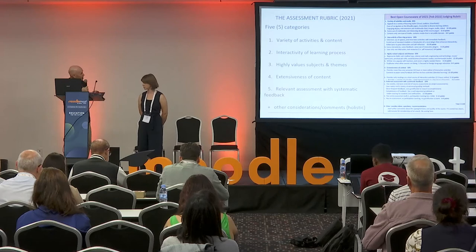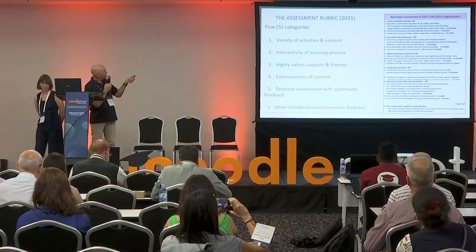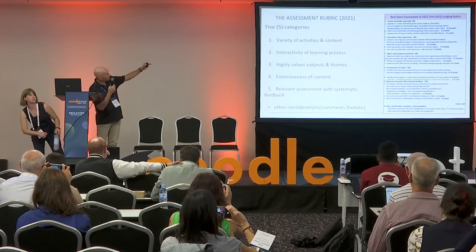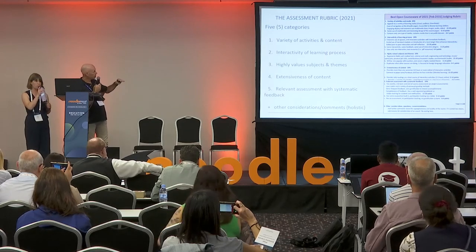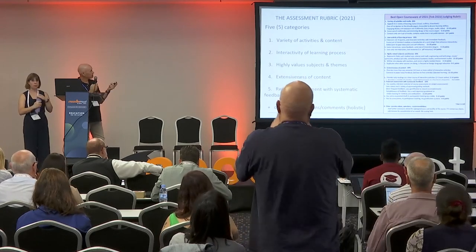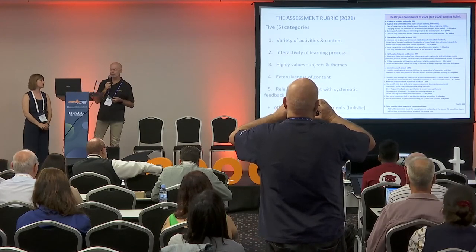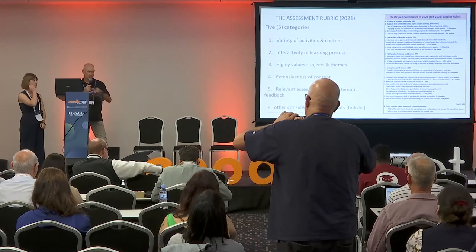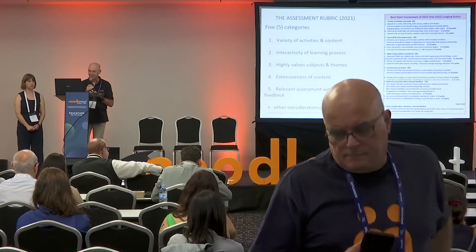This is a quick look at our assessment rubric. We have five categories of assessment, with a range of points for different levels of accomplishment in each category. We also allow for some holistic assessment. This rubric has been in use since 2021. At the bottom, judges can add other considerations or comments based on the course's context of use, which can change the total score.